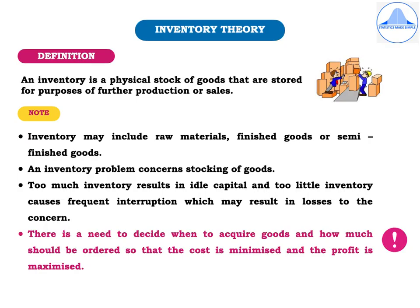Let's begin with the definition of an inventory. An inventory is a physical stock of goods that are stored for purposes of further production or sales. The inventory may include raw materials, finished goods, or semi-finished goods. An inventory problem concerns stocking of goods — too much inventory results in idle capital, and too little inventory causes frequent interruption which may result in losses. So there is a need to decide when to acquire goods and how much should be ordered so that the cost is minimized and the profit is maximized.